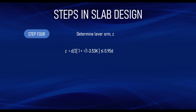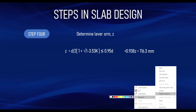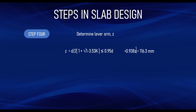Step four: determine the lever arm z. The lever arm is given by the formula z = (d/2)(1 + √(1 − 3.53K)), and the value must always be less than or equal to 0.95d. Substituting the K value obtained previously, you get z = 0.938d. Slotting in d = 124 mm gives z = 116.3 millimeters. If z is greater than 0.95d, then you must use 0.95d as your z.